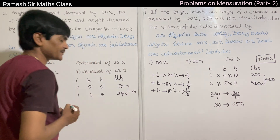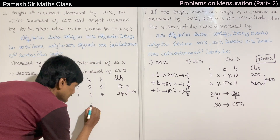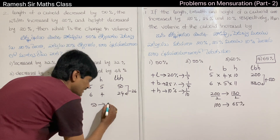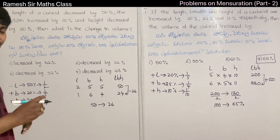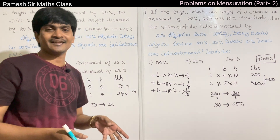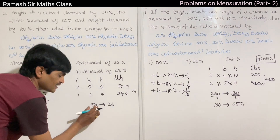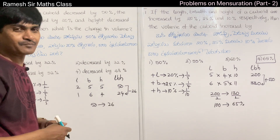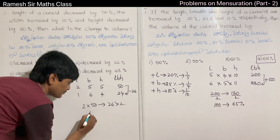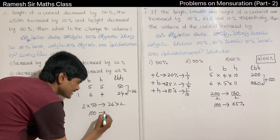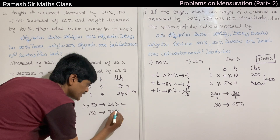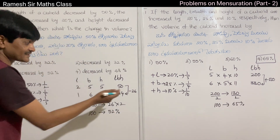We now have 26 units as the new volume versus the original 50 units. So the change is 50 to 26 units. With a base of 100, we compute: the decrease is 100 minus 52 = 52 percent.